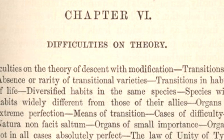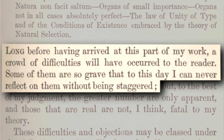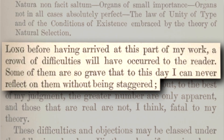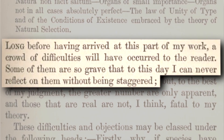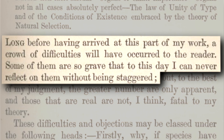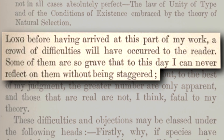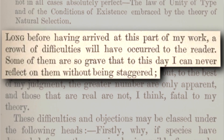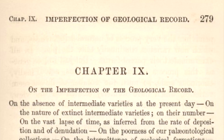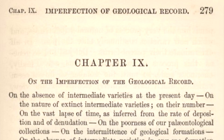But as Darwin wrote on page 171: 'Long before having arrived at this part of my work, a crowd of difficulties will have occurred to the reader. Some of them are so grave that to this day I can never reflect on them without being staggered.' Why, if species have descended from other species by insensibly fine gradations, do we not everywhere see innumerable transitional forms?